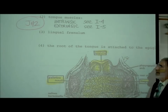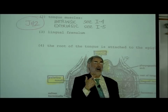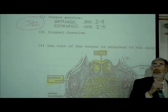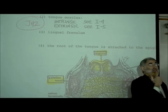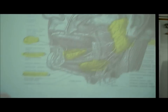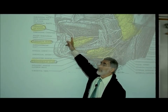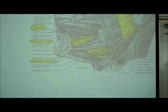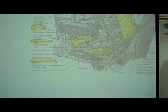The lingual frenulum — 'lingual' means tongue. 'Labial' means lip. Earlier we said there's a superior labial frenulum. On the underside of the tongue, right along the midline, is the lingual frenulum — the fold of skin on the underside of your tongue. Don't confuse labial (lip) with lingual (tongue).